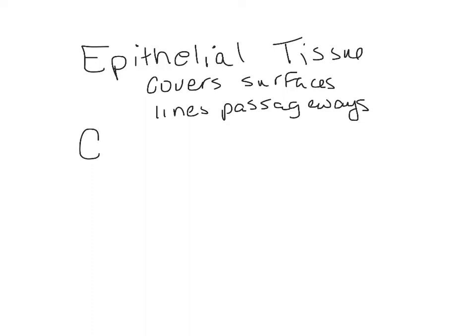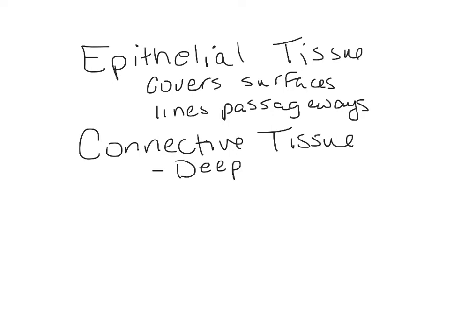We also have connective tissue, which is a big group we'll cover in another segment. Connective tissue is deep — deep to epithelial tissue — and has many different functions. We'll see connective tissue proper, which cushions and surrounds things, fluid connective tissue, and then cartilage and bone. All of those are connective tissues.